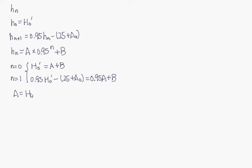And we can solve A and B to get A is H0' plus 20 times (25 plus A0) and B is minus 20 times (25 plus A0).